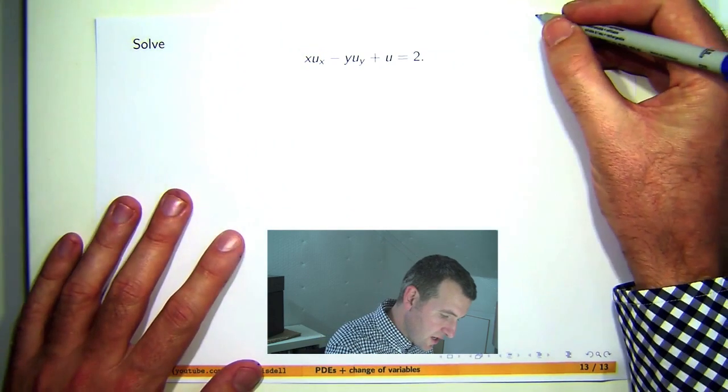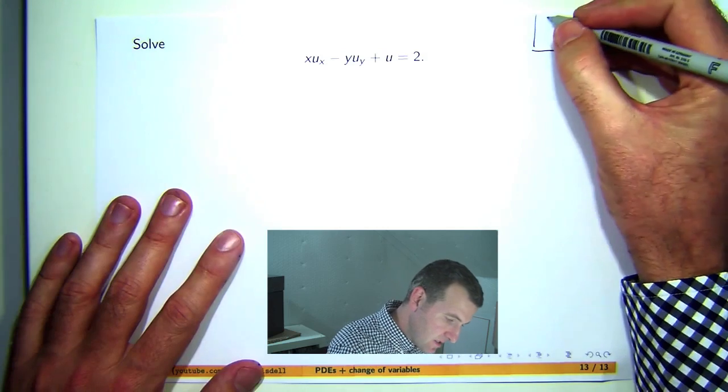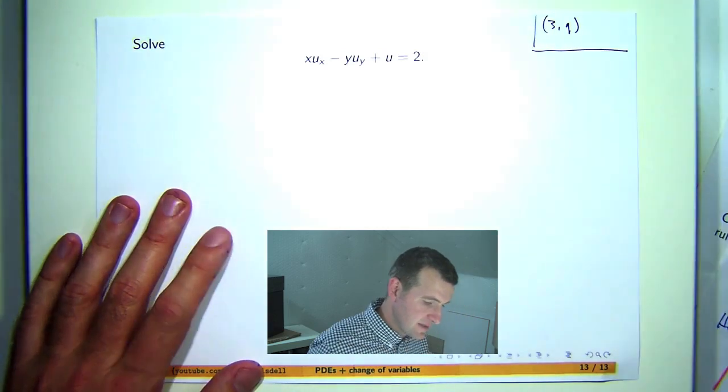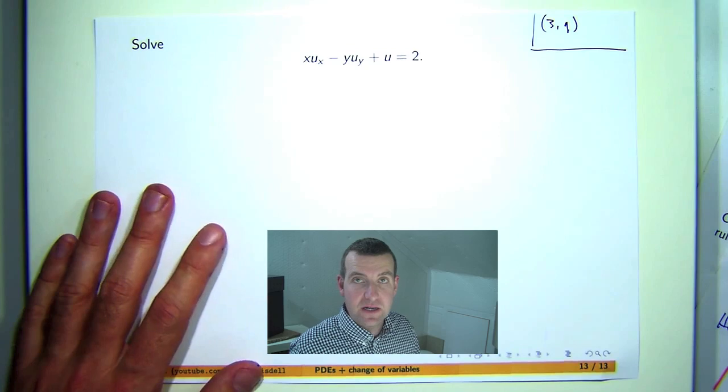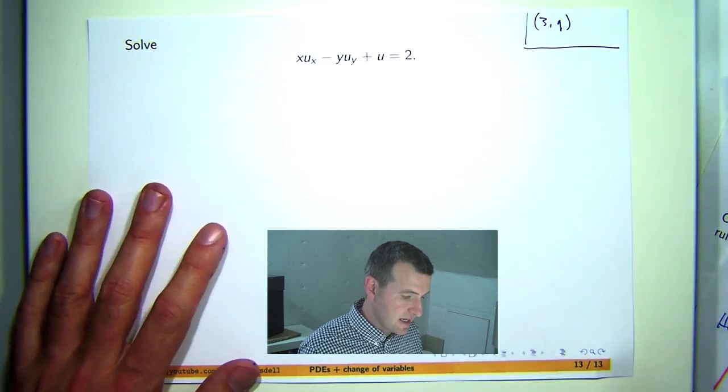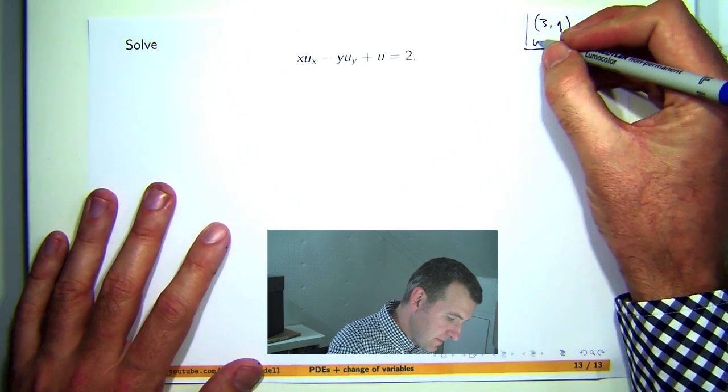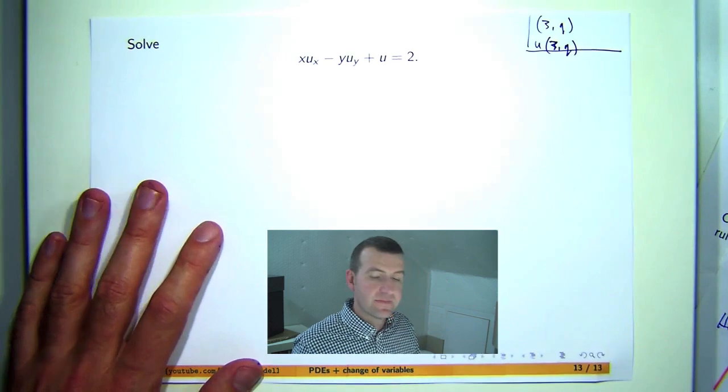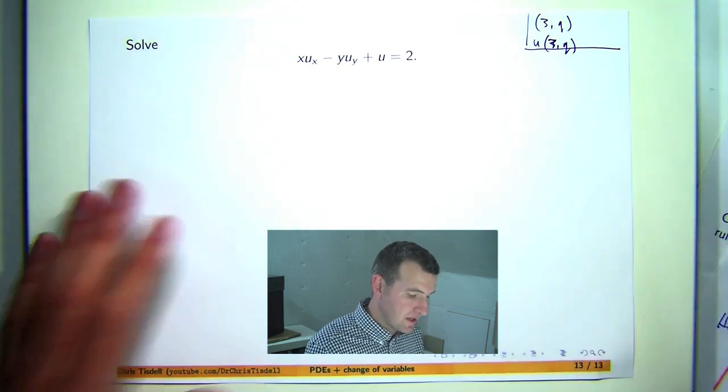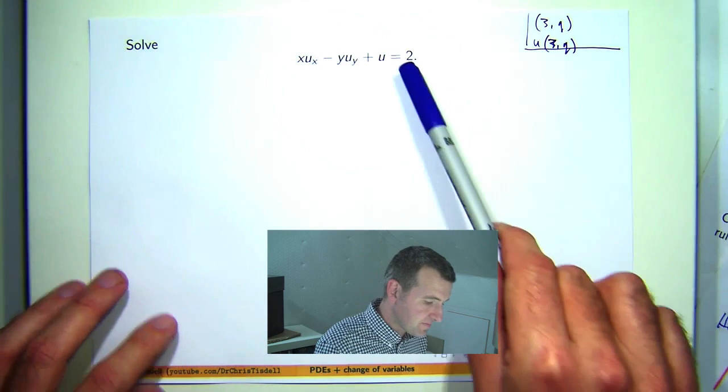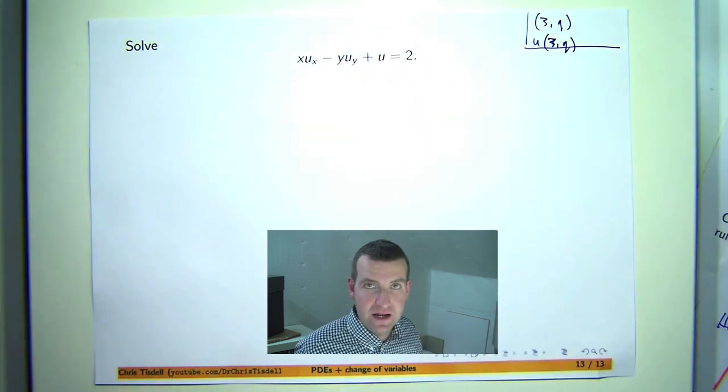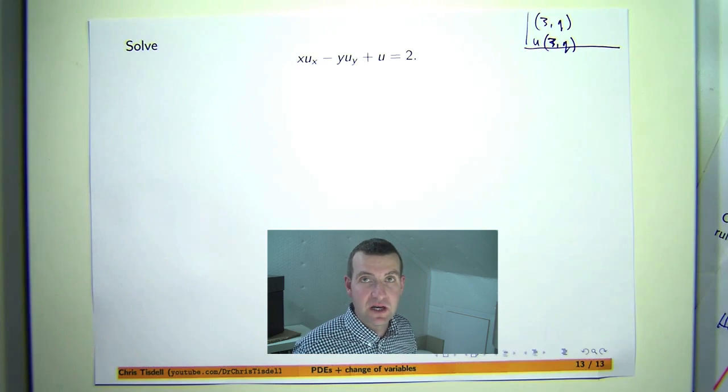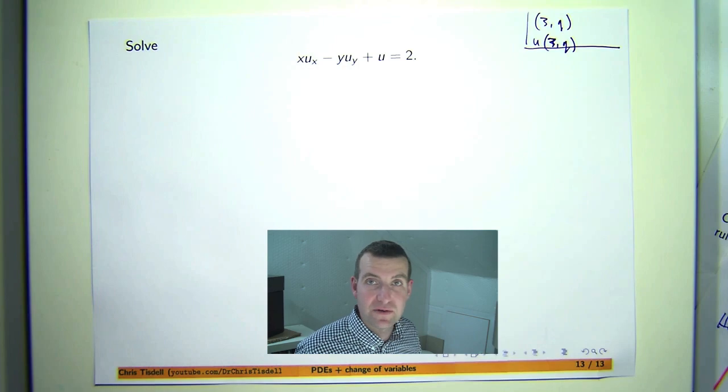What we are going to try to do is to develop a new set of coordinates, or a new set of variables such that when we consider u as a function of these variables and we compute the partial derivatives, the partial differential equation gets simplified in a huge way because one of the derivatives will disappear. Therefore we can use essentially ordinary differential equation techniques to solve it.